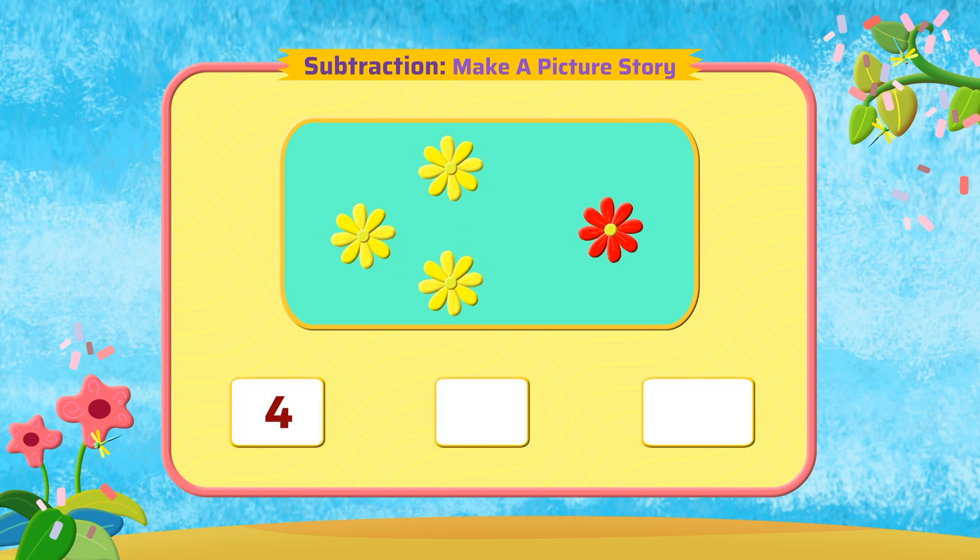From the four flowers, take away one red flower. We are left with three yellow flowers.